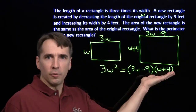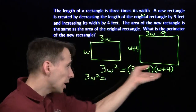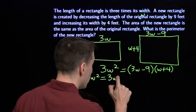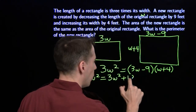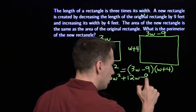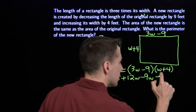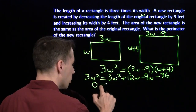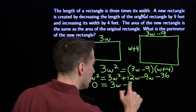We have an equation we can try to solve for w. This side is just 3w squared. Over here, we use the distributive property to multiply out (3w − 9)(w + 4). 3w times w gives us another 3w squared, which is convenient because these two will cancel out. 3w times positive 4 gives us plus 12w. Minus 9 times w gives us minus 9w. Minus 9 times positive 4 gives us minus 36. We subtract 3w squared from both sides — the w squared is gone.